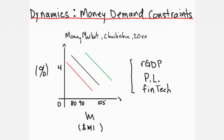Illustrated are three different money demand curves for Chakistan in 20XX. Nominal interest rates (i) in percent are on the y-axis and quantity of money (M) in M1+ dollars on the x-axis. The curves are parallel and downward sloping, with the red MD'' to the left of the black MD curve, which is to the left of the green MD' curve. This indicates that at every nominal short-run interest rate, more money is demanded under MD' conditions than MD, and similarly comparing MD to MD''.